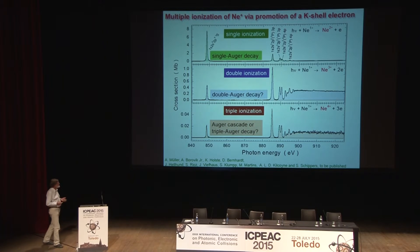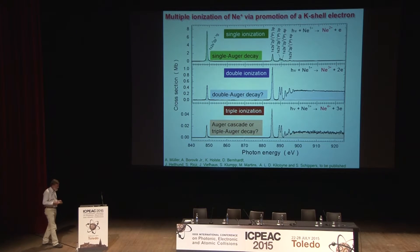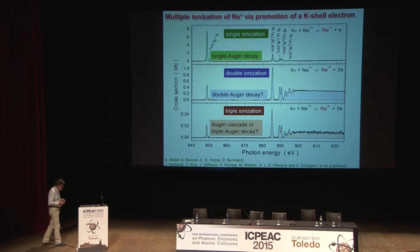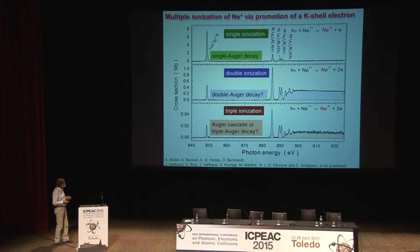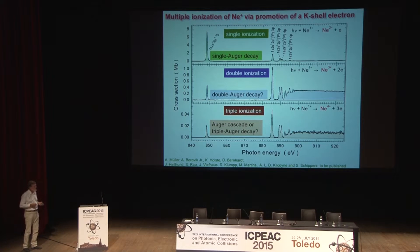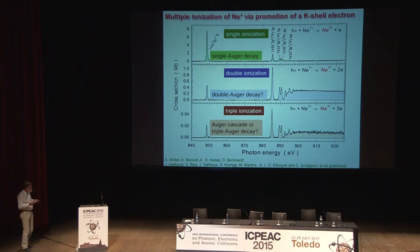Since the main topic of this talk is triple Auger decay, we will now look at another example where we can really unambiguously say the triple ionization peak can only be seen because there is a triple Auger decay. I want to mention that the Auger cascades that can produce triple ionization of neon 1+ are also quite complex, and they involve four-electron Auger processes.